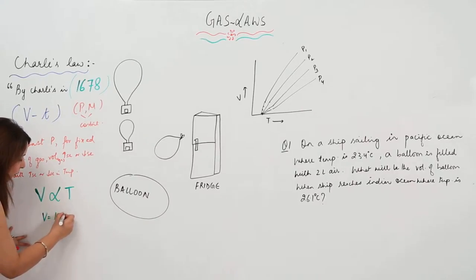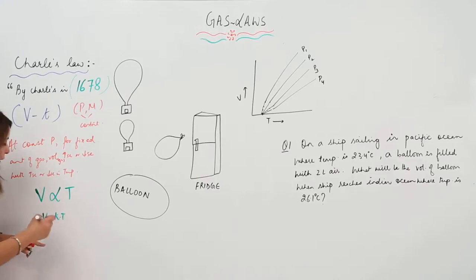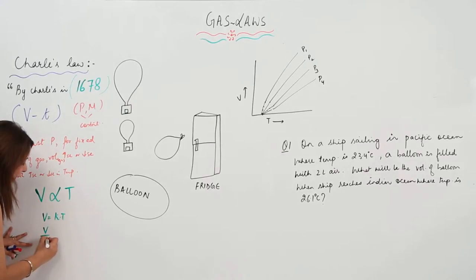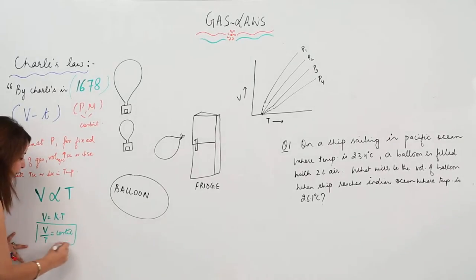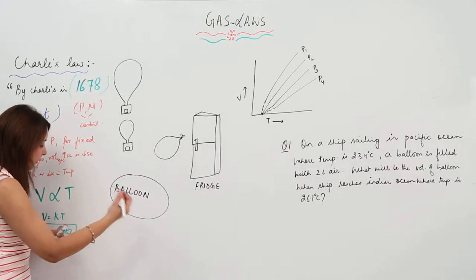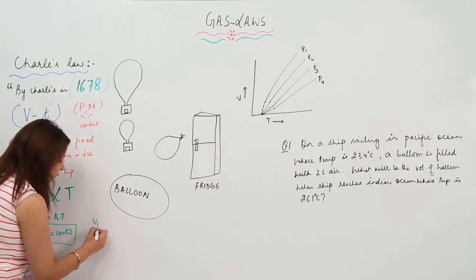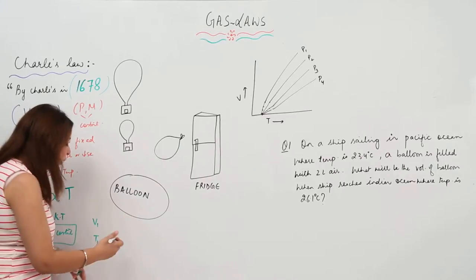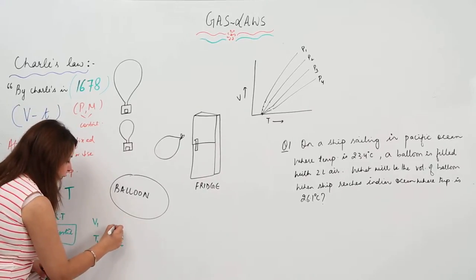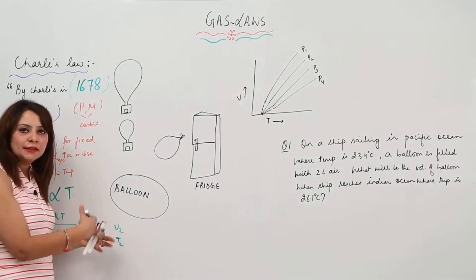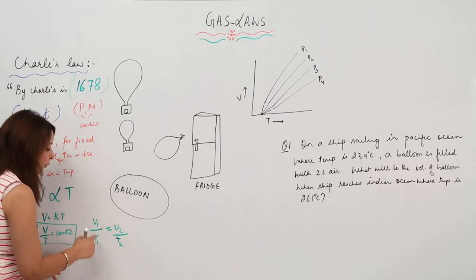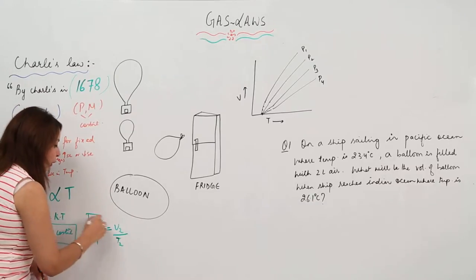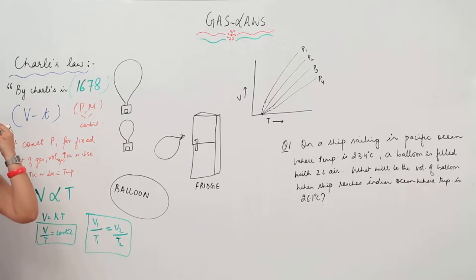That means V = K × T, where K is a constant, or we can write V/T = constant. The ratio of volume to temperature is constant. So if a gas has volume V1 at temperature T1 and we heat it so temperature changes to T2 and volume becomes V2, we get the expression: V1/T1 = V2/T2.